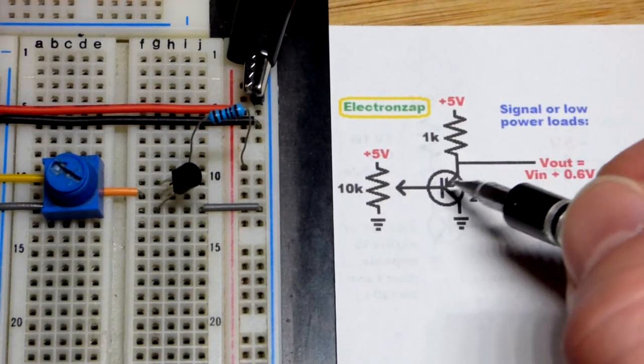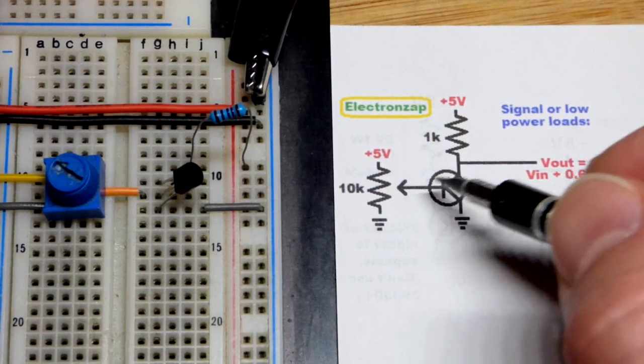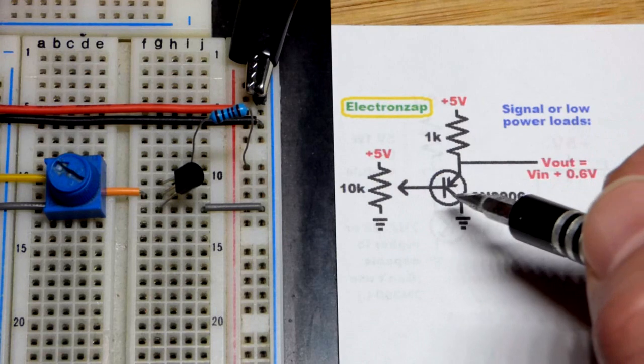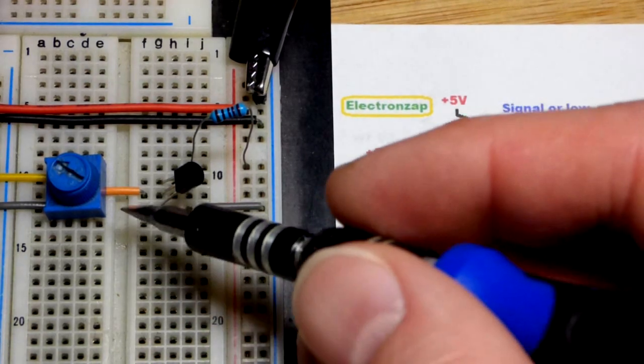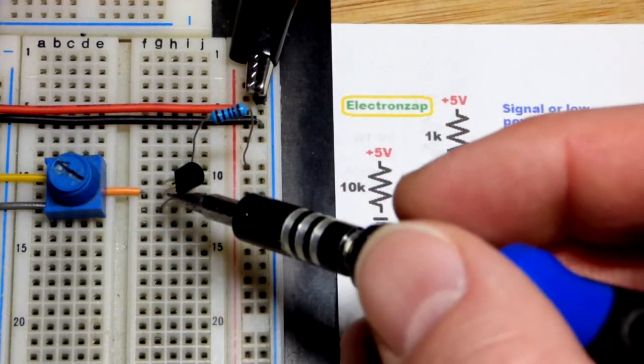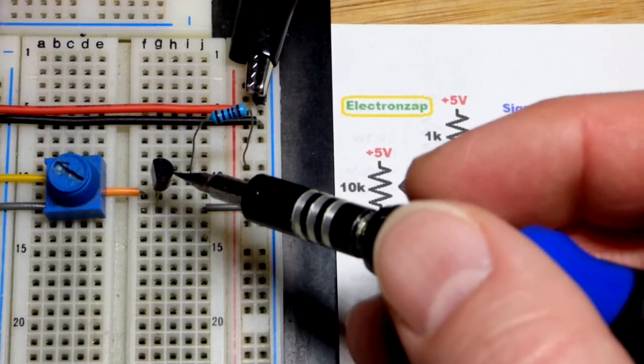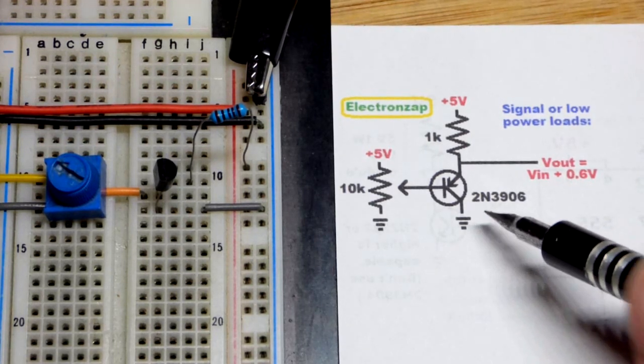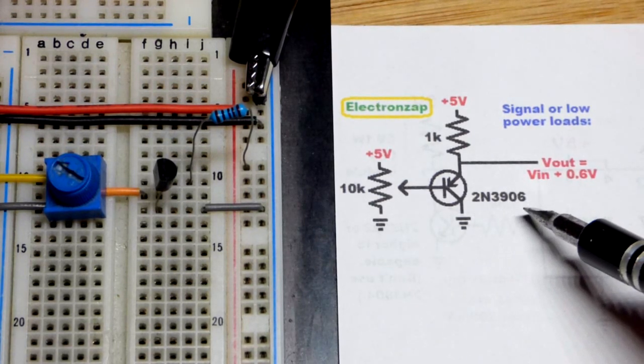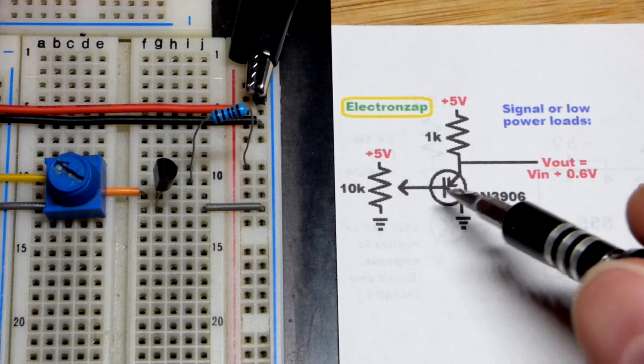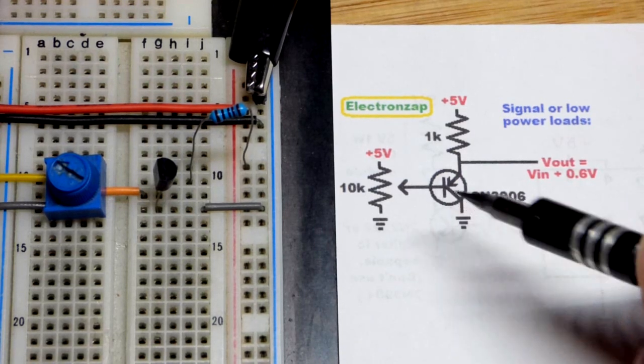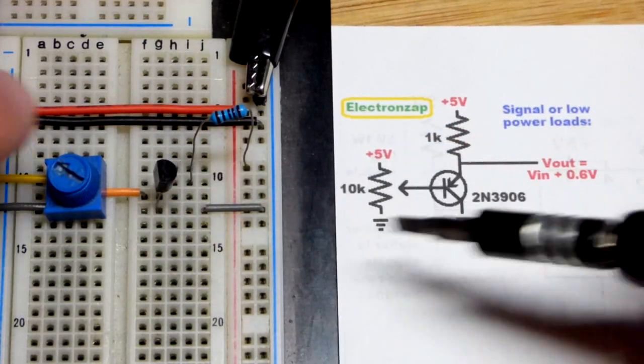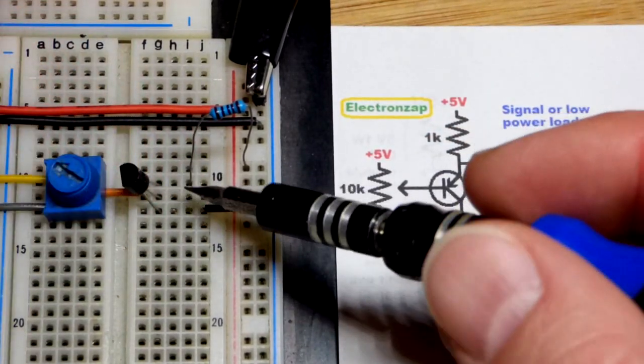Too high of a value, the PNP bipolar junction transistor does need some current to operate, so you don't want to go a lot too high. But 10k as you can see works fairly well. So that is coming to the base of the PNP bipolar junction transistor using a 2N3906. There's an NPN version, 2N3904. It has the same basic properties but the chemistry is the opposite, current flows in the opposite way.